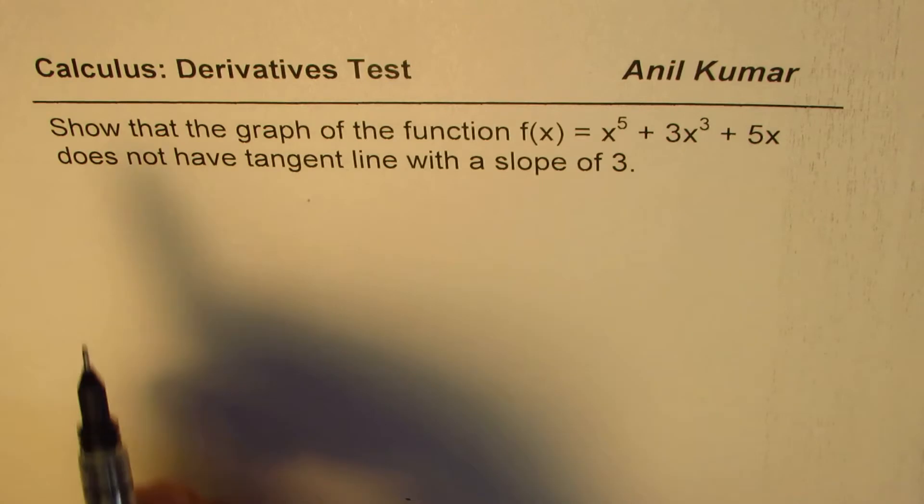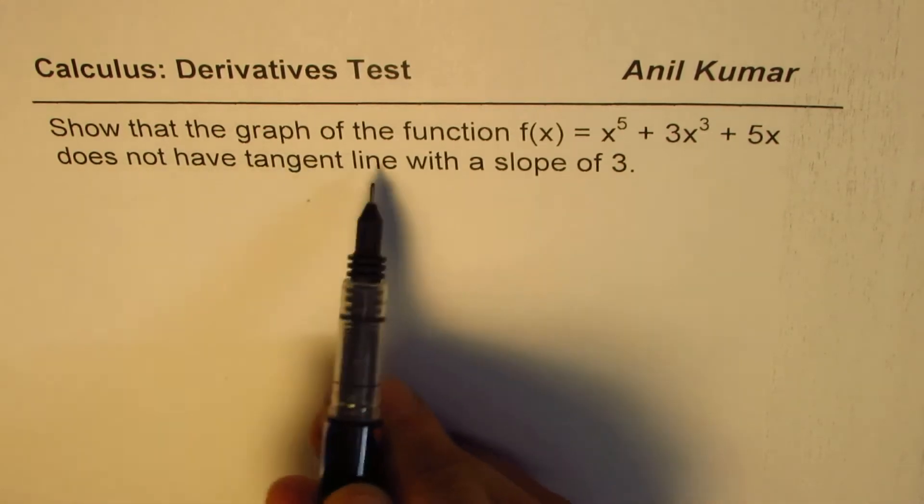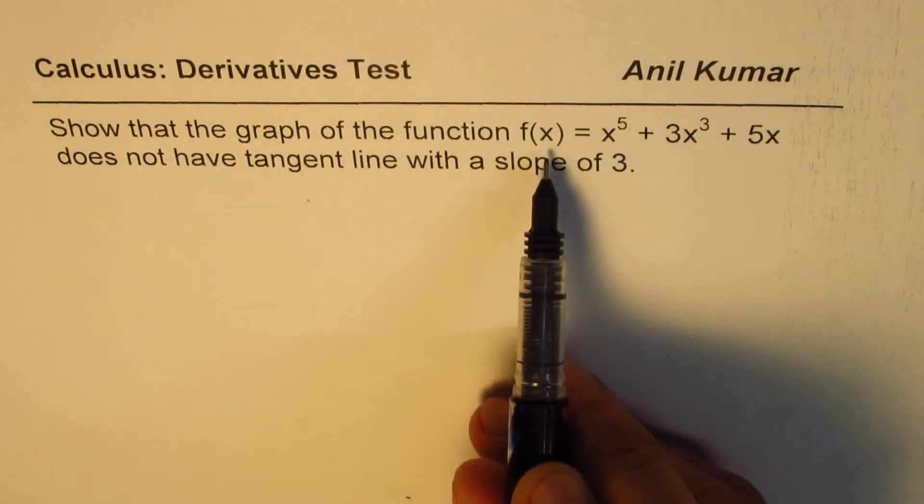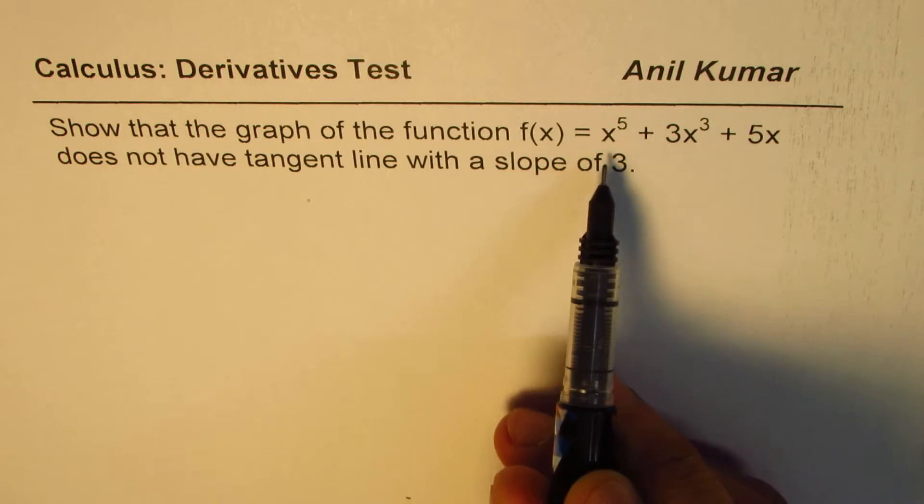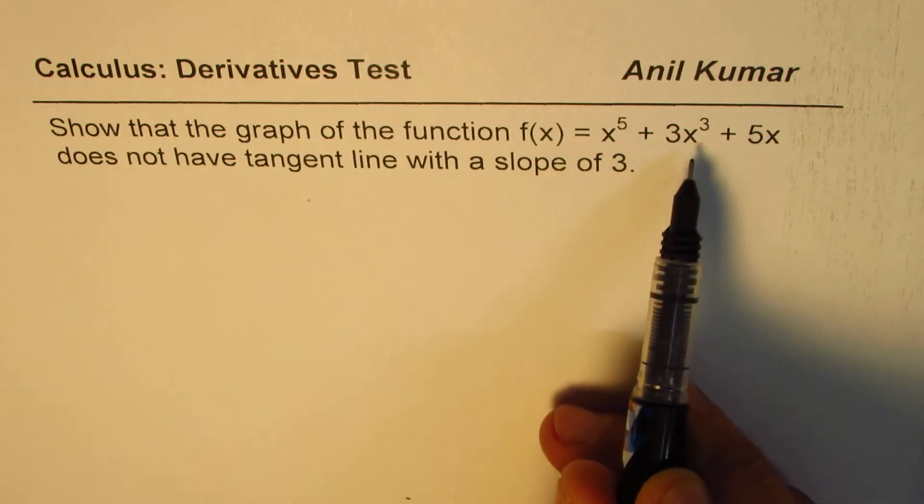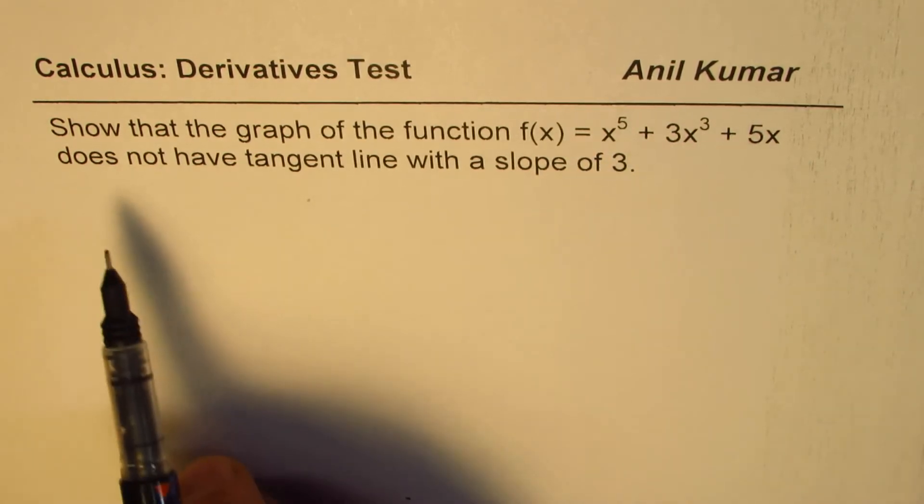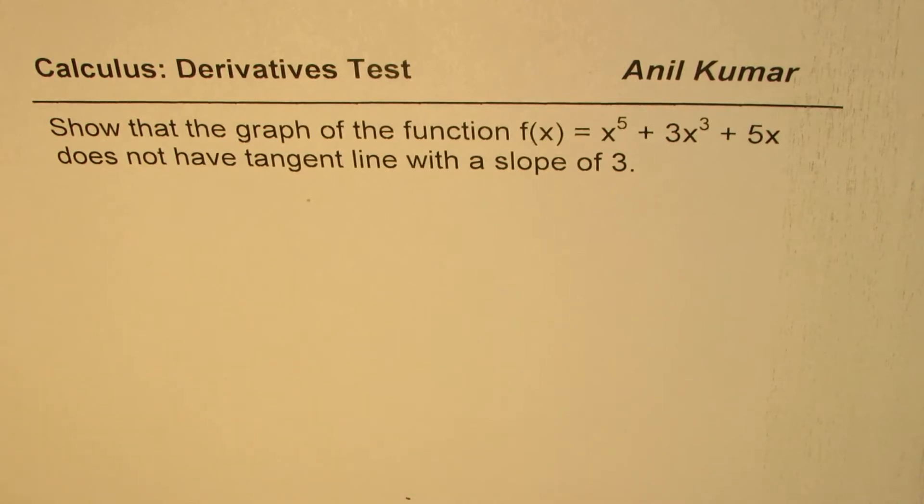It says show that the graph of the function f(x) = 2x^5 + 3x^3 + 5x does not have any tangent line with a slope of 3. You can always pause the video, answer the question, and then look into my suggestions.